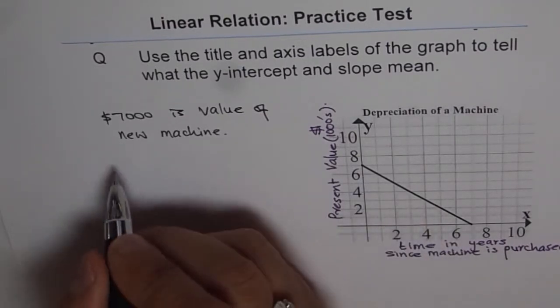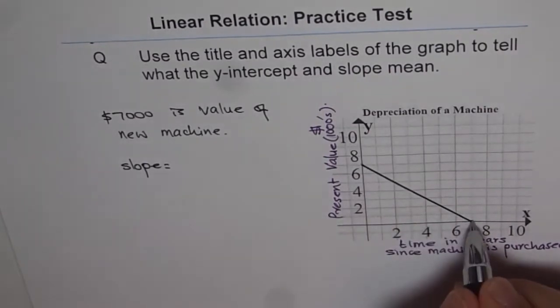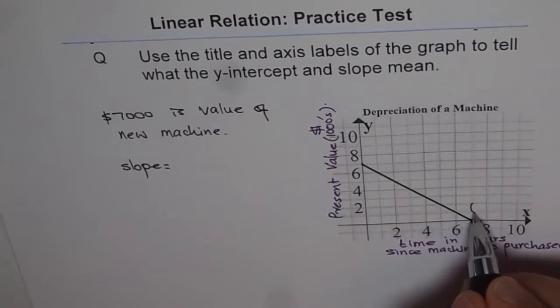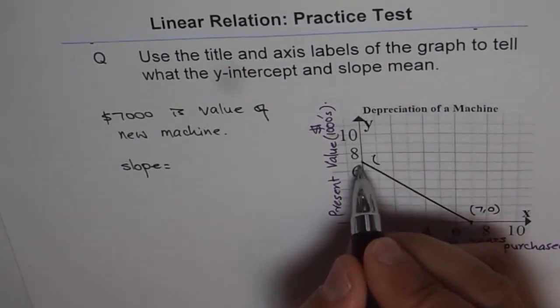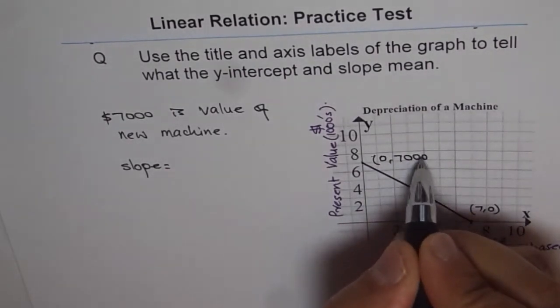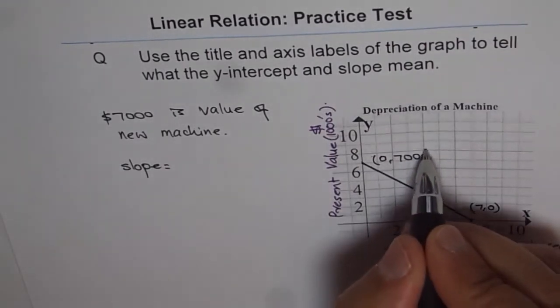So the slope here is y2 minus y1. The coordinates of this point are, we will write this coordinate as (7, 0). And the coordinates of this point are (0, 7000). Because it is in thousands of dollars, so it is $7,000.